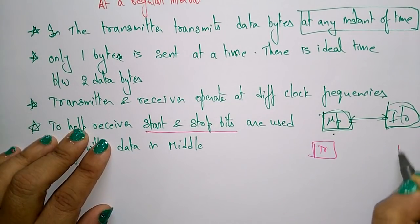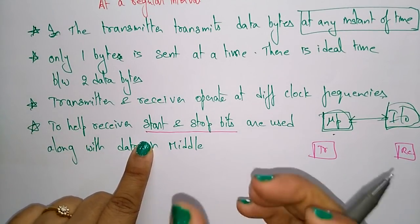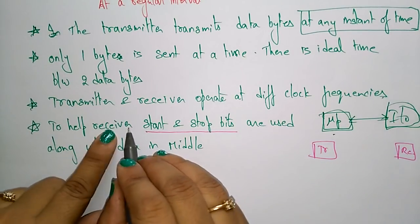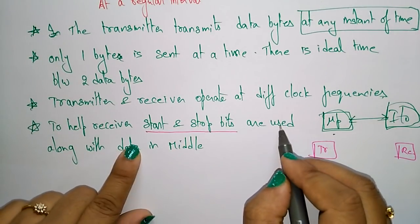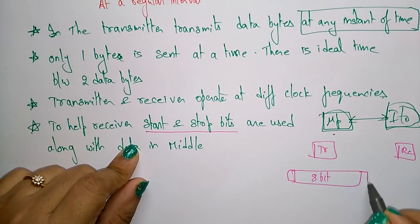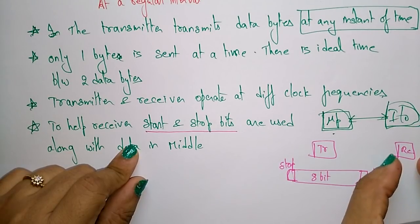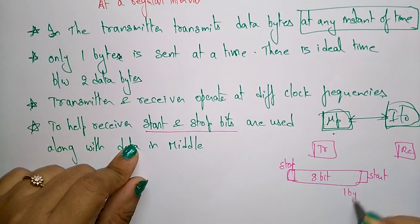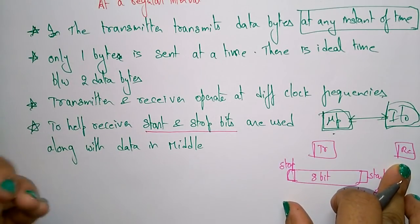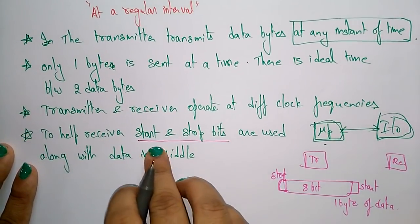In asynchronous data transmission, the receiver can know whether a byte was completed or not. To help the receiver, start and stop bits are used along with the data. For example, with 8 bits of data, before and after the 8-bit data we use start and stop bits. By seeing these bits the receiver understands it has received one complete byte of data.